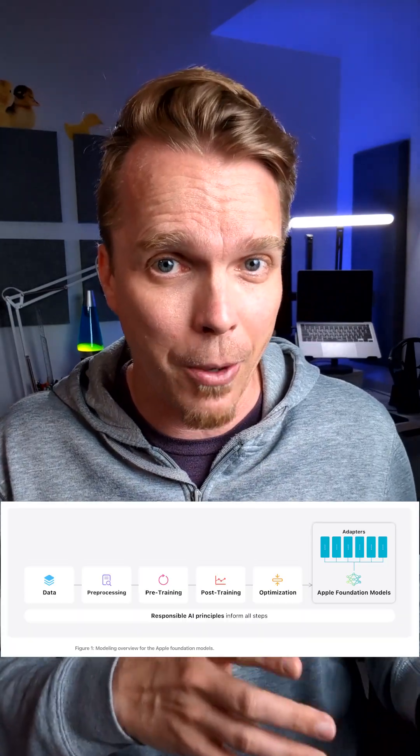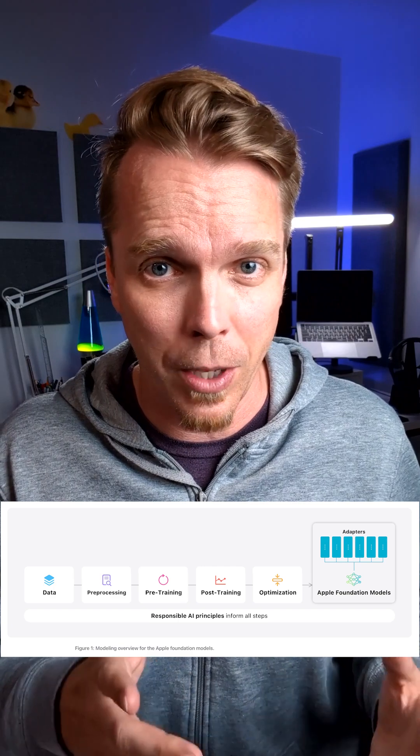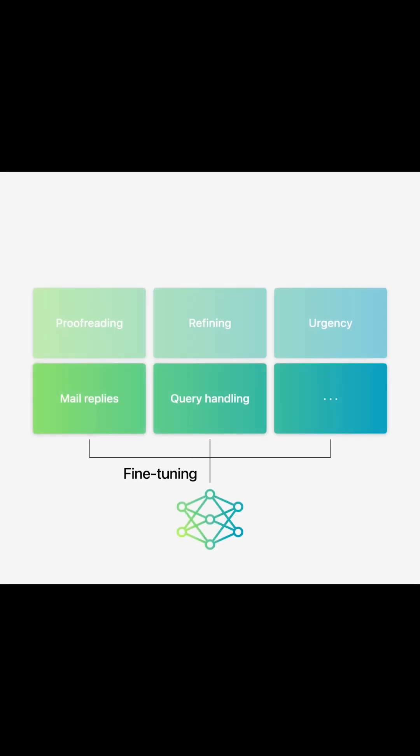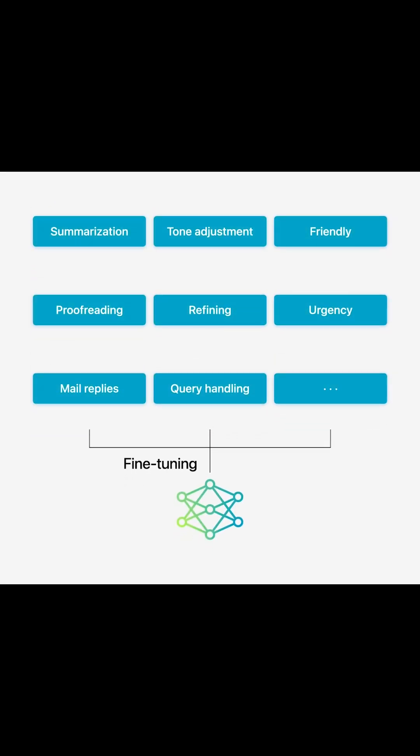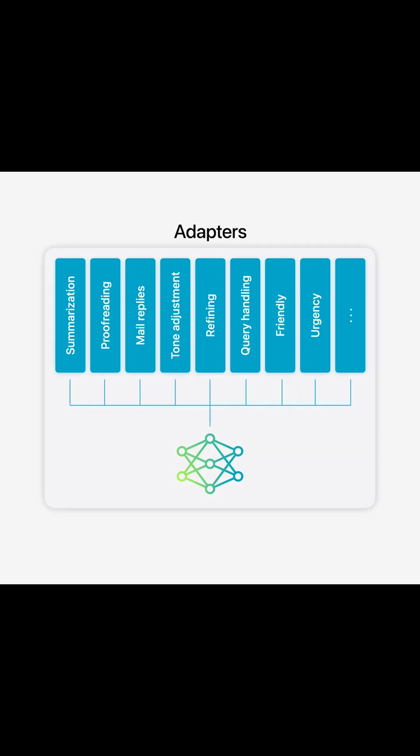One thing I find really interesting about Apple's approach to AI is how they're using adapters on top of the base models to augment the behavior of the AI. By having fine-tuned adapters that can plug in and out depending on what task the AI is currently performing, they don't have to build several different underlying foundation models. They can simply augment the behavior of the underlying model whenever that augmentation is necessary.